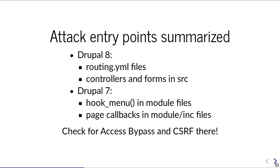Some attack entry points with routing summarized: in Drupal 8 you have routing YAML files to look at first, and then in the source folder the controllers and forms are important because those are things an attacker can potentially directly reach. In Drupal 7, the equivalent is hook_menu and page callbacks in module or inc files. Check for access bypass with permissions, how access handling is done, and also for cross-site request forgery. Whenever you see a delete or change action in the routing file, I immediately check if it's a confirmation form or just a controller.